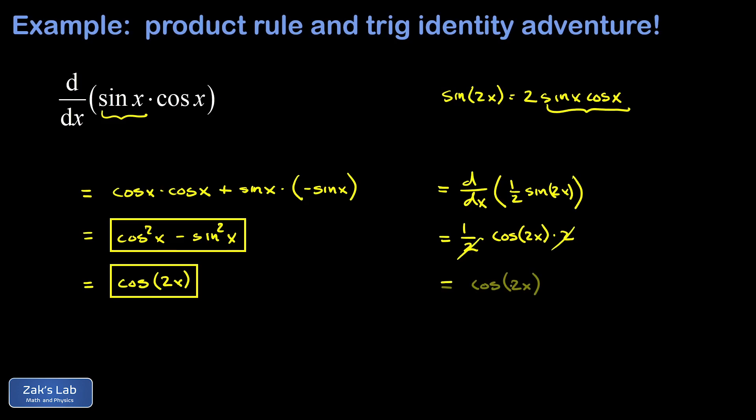Those 2s cancel out and we're relieved to arrive at the same solution of cosine 2x and that's it.